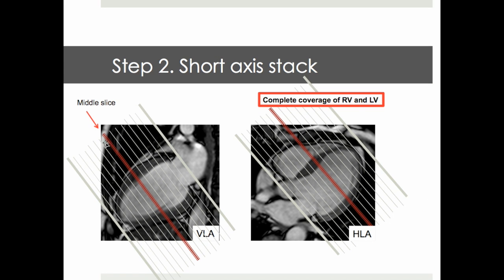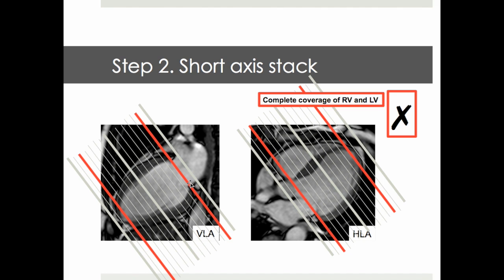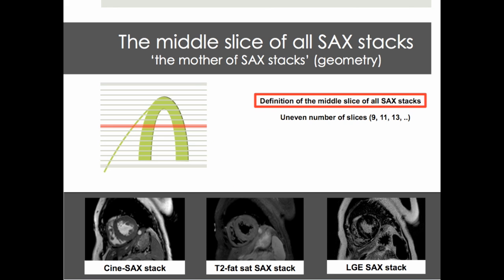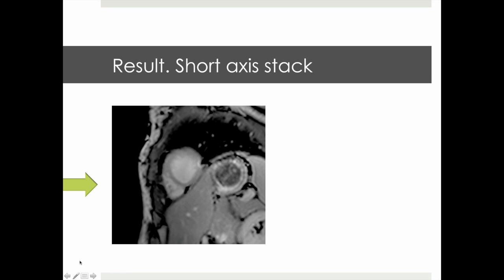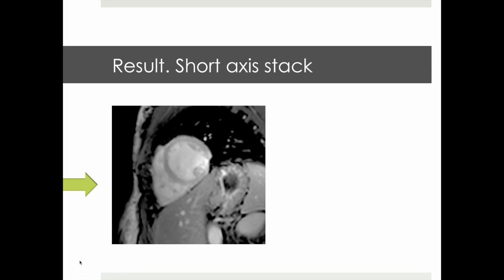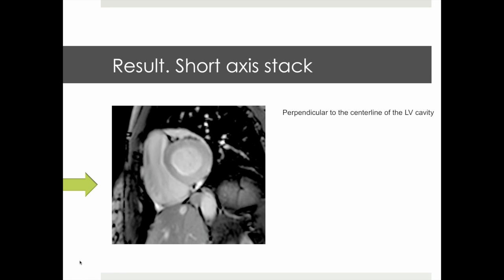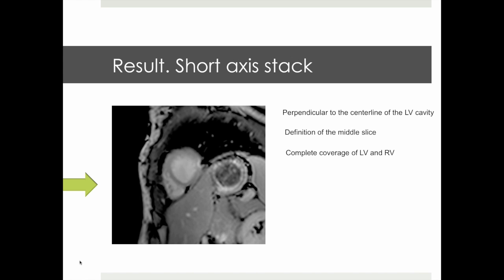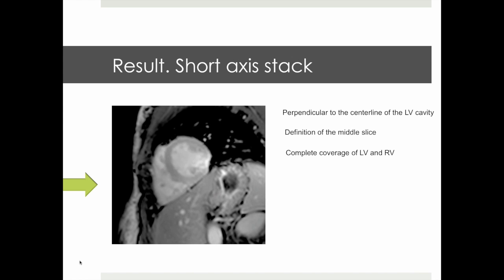Having defined the middle slice of our short axis stack, the next point is to achieve complete coverage of right and left ventricle, avoiding tight placement of the stacks and loss of information at the apex as well as at the base, which leads to underestimation of right ventricular and left ventricular volumes and LV mass. The middle slice defines the geometry of all short axis stack acquisitions — not just cine imaging, but also edema imaging or late gadolinium enhancement imaging. It is defined by the choice of an uneven number of slices.